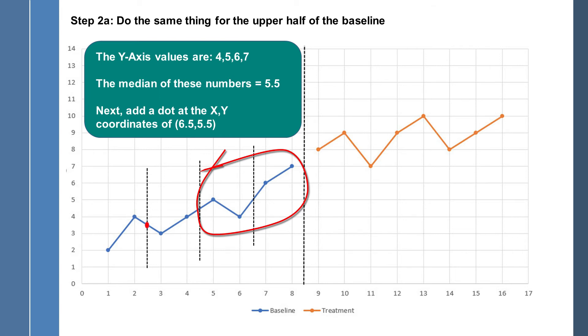So what we're going to do is we're going to find the intersection on the x-y coordinates of 6.5, which is where the line is, and 5.5 on the y-axis. So we drop a line in there and at that intersection we're going to put down another red dot and that's going to be the second anchor for our baseline trend line.